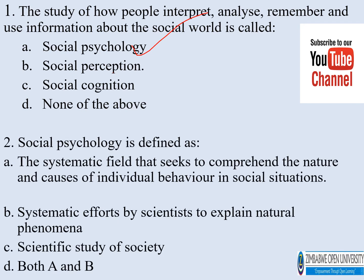Number two. Social psychology is defined as: a) the systematic field that seeks to comprehend the nature and causes of individual behavior in social situations, b) systematic efforts by scientists to explain natural phenomena, c) scientific state of society, and d) both a and b. The correct answer is a.